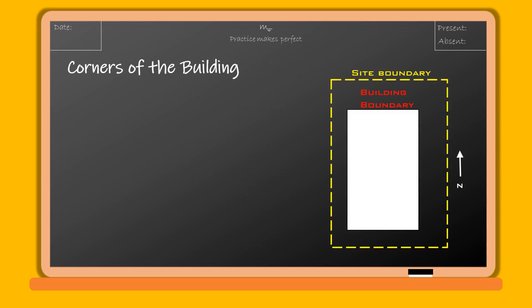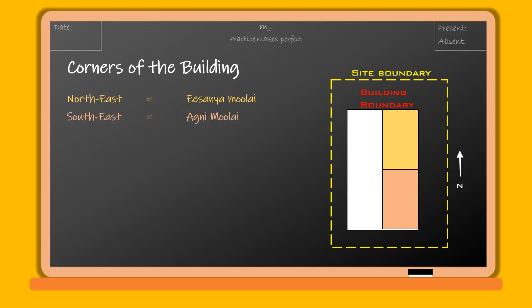Generally, four corners are named with gods' names: Isanya Mule for the northeast corner, Agni Mule for the southeast corner, Kubera Mule for the southwest corner, and Vayuvya Mule for the northwest corner.